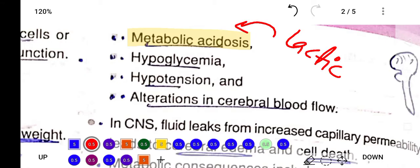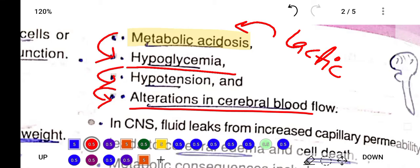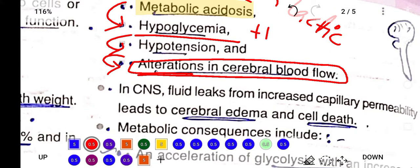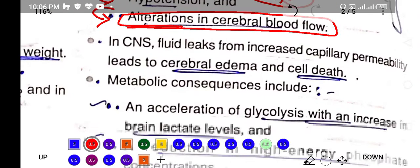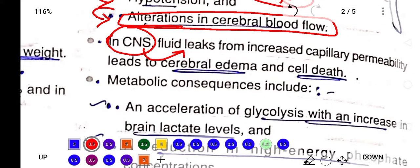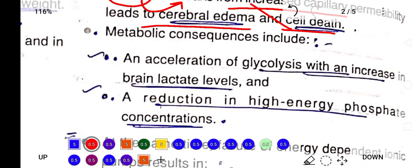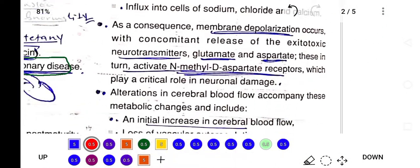Hypoglycemia occurs, hypertension, and altered cerebral blood flow, which results in hypoxic ischemic encephalopathy. That is the end stage of birth asphyxia. In the CNS, fluid leaks from increased capillary permeability, leading to cerebral edema and cell death. Hypoxic ischemic encephalopathy can develop.